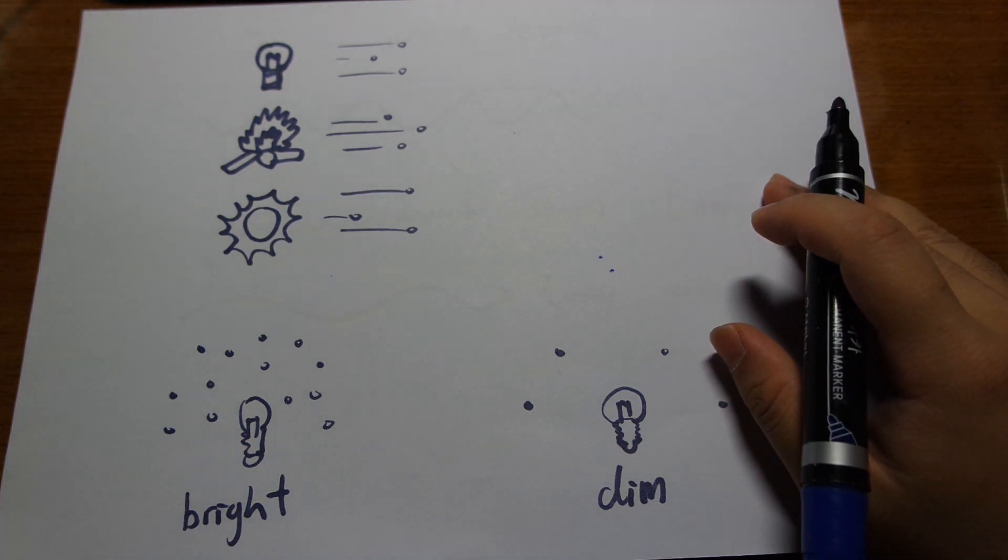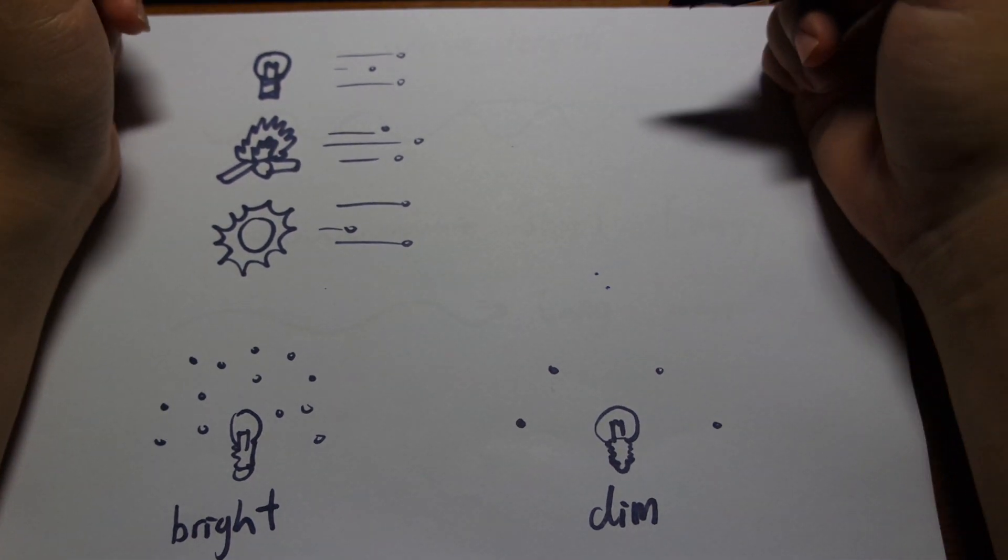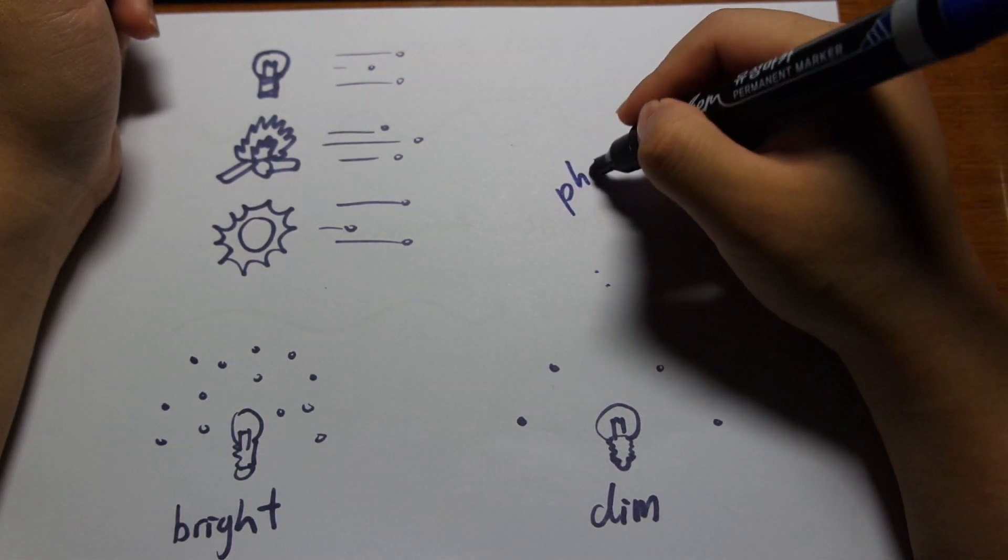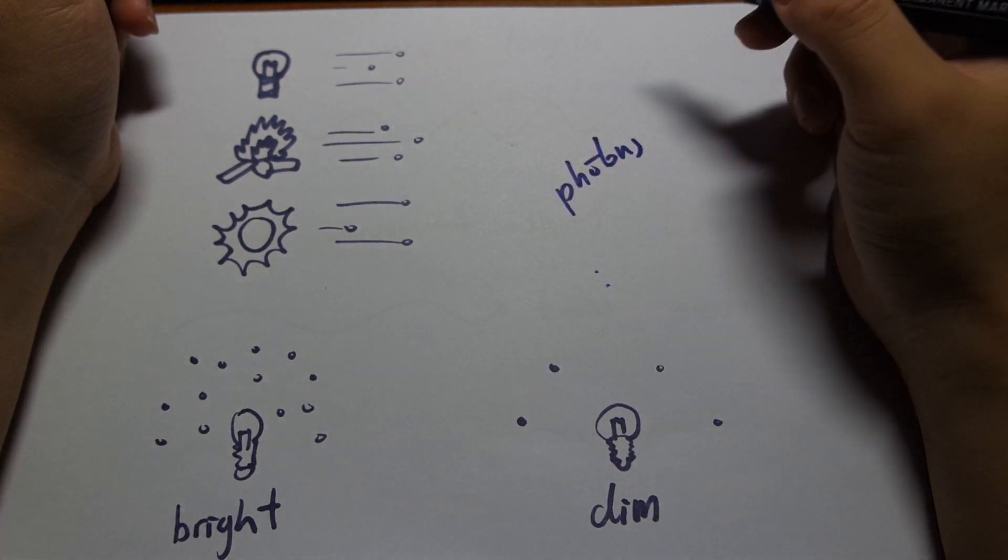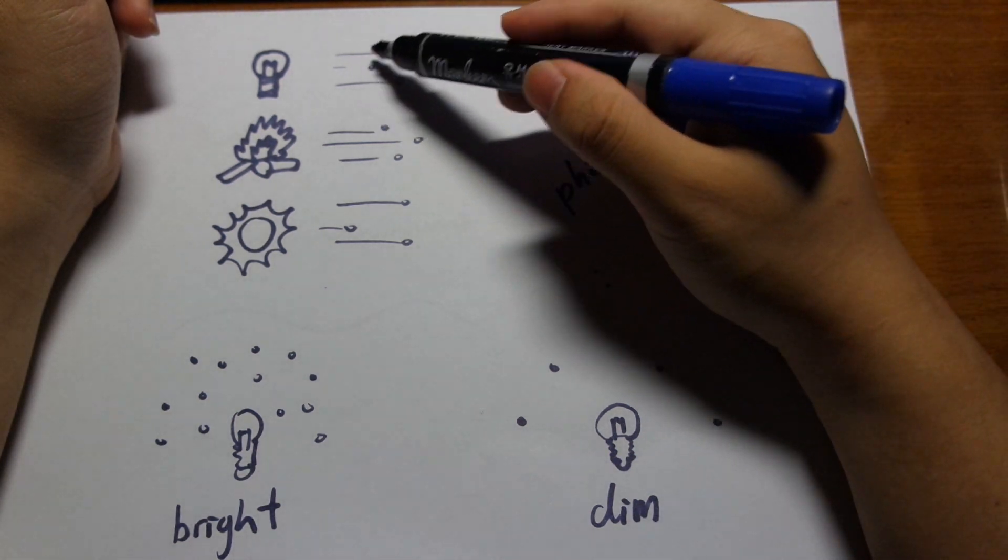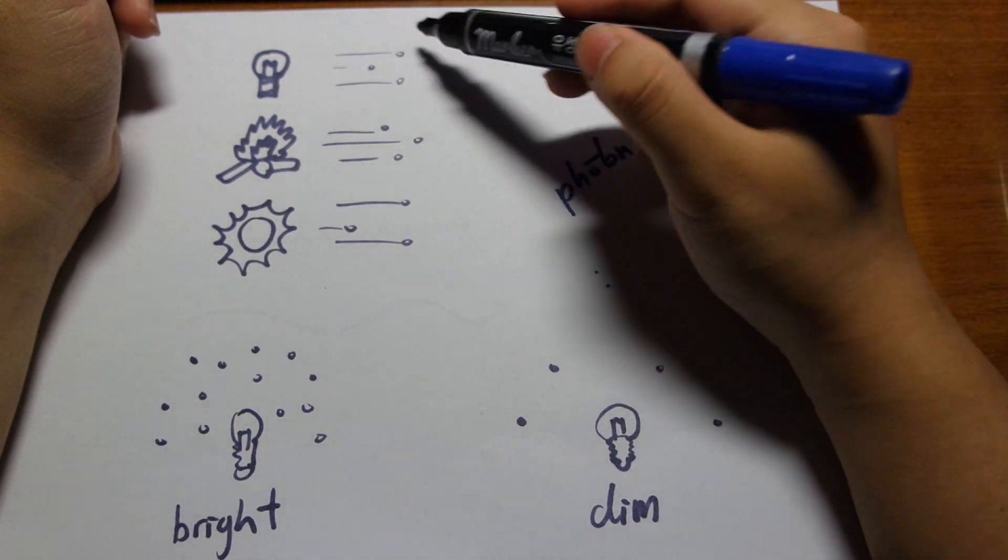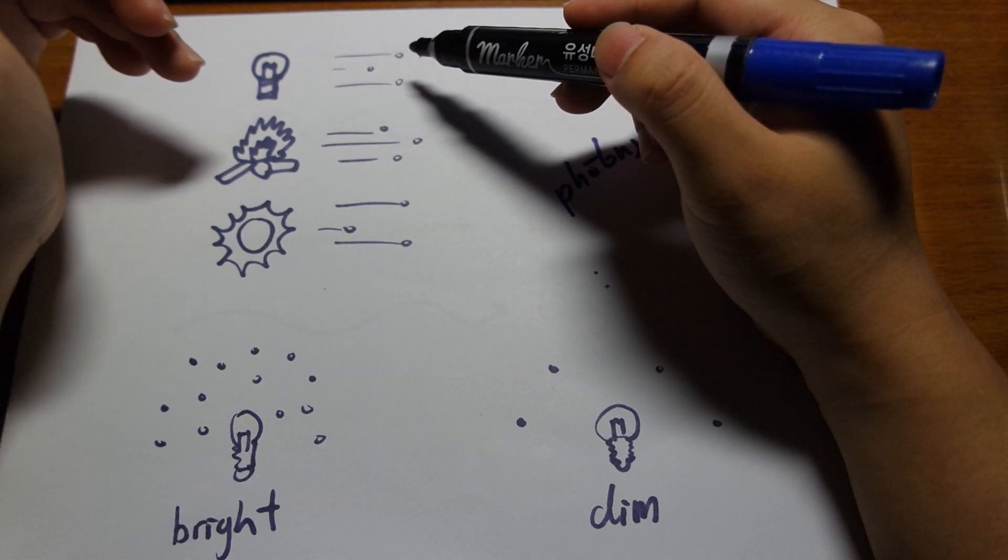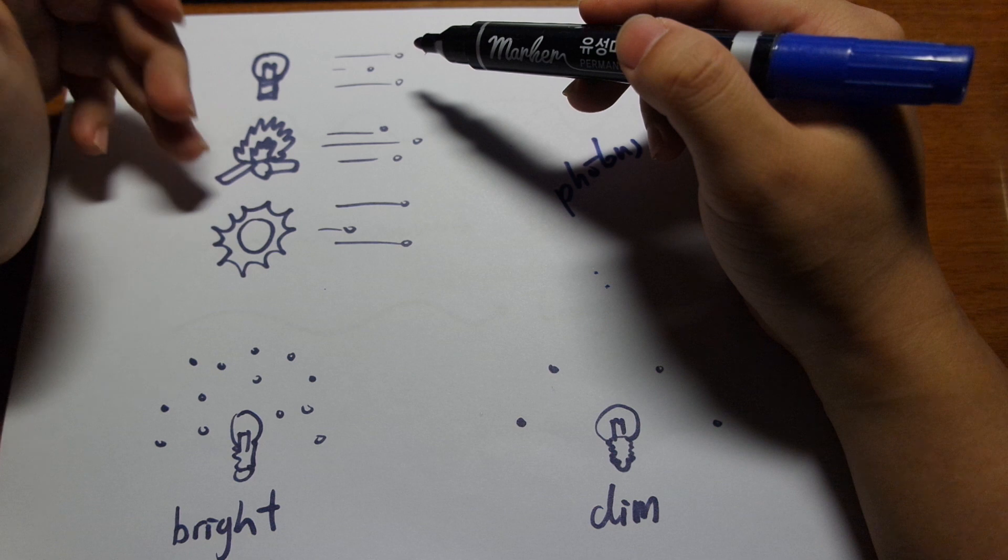So first, let's talk about light intensity. How bright a light is it? So light comes in these tiny packets called photons. So they come in tiny packets like this. So if light is coming out, there will be millions and millions of photons coming out.